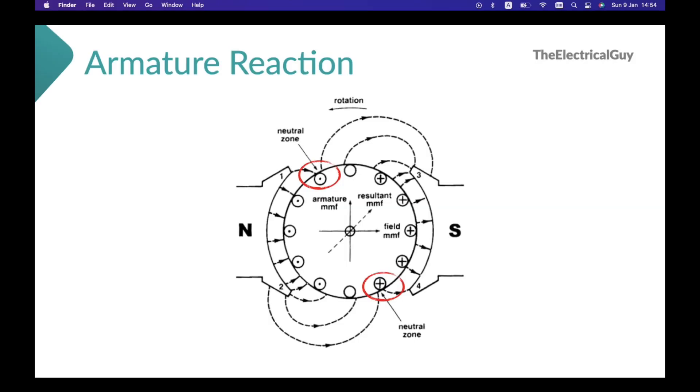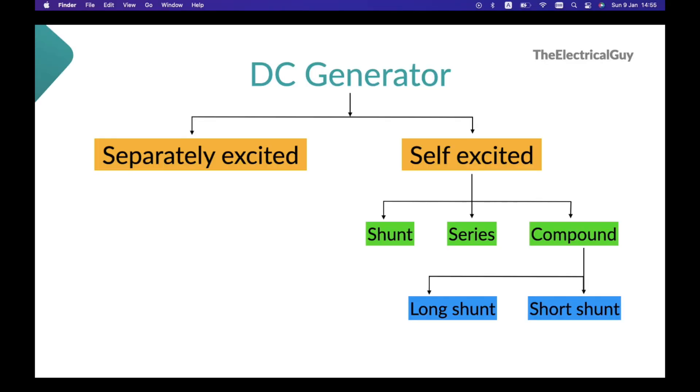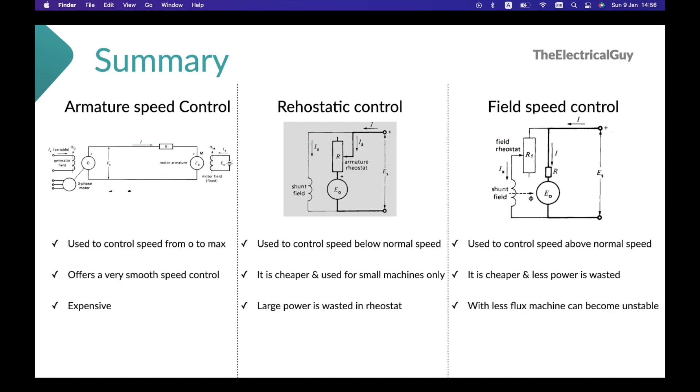We'll cover armature reaction and its effects, commutation, different types of DC generators and motors, their characteristics, and where we can use them.